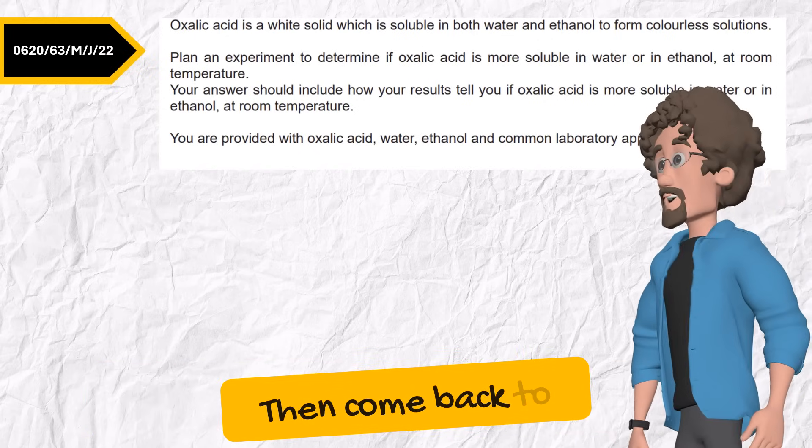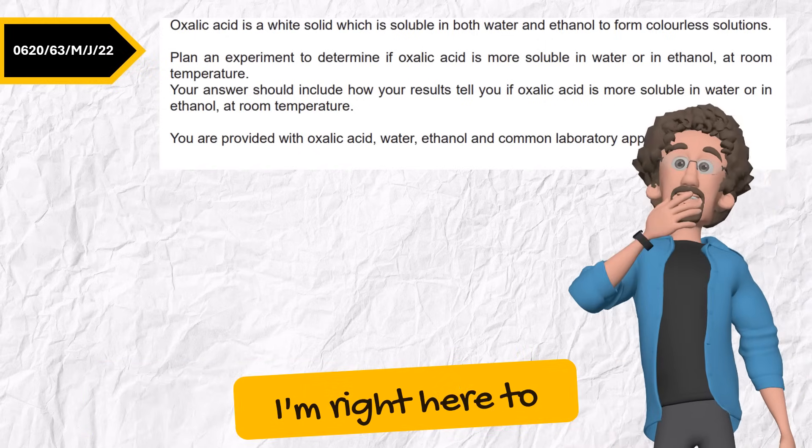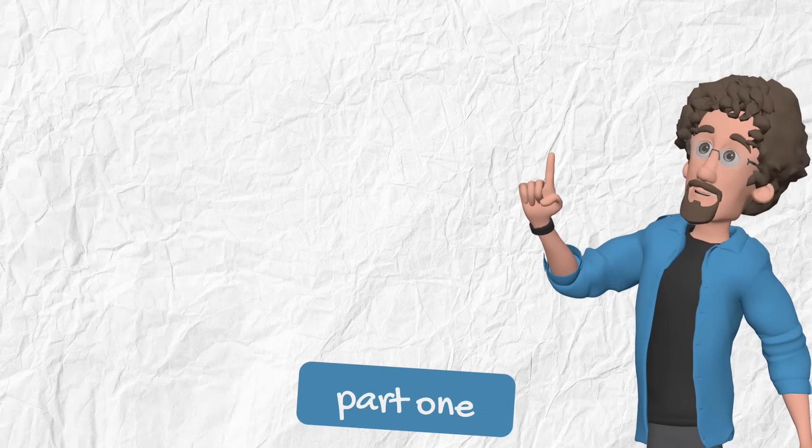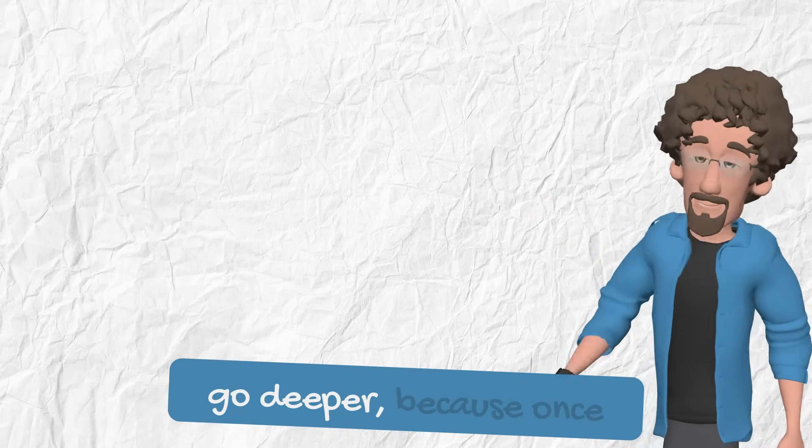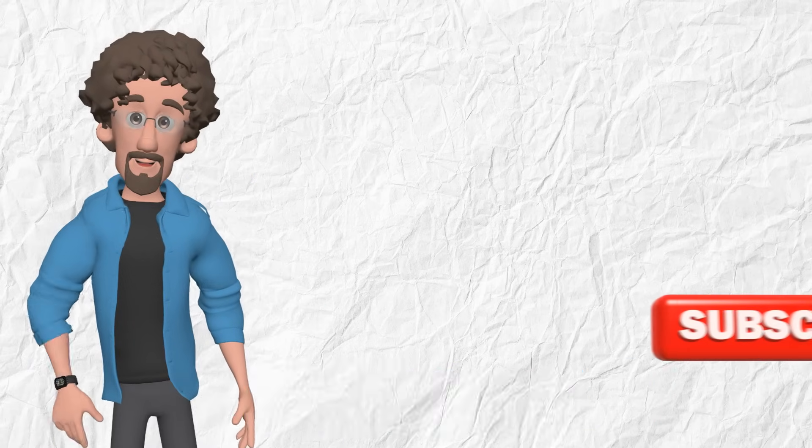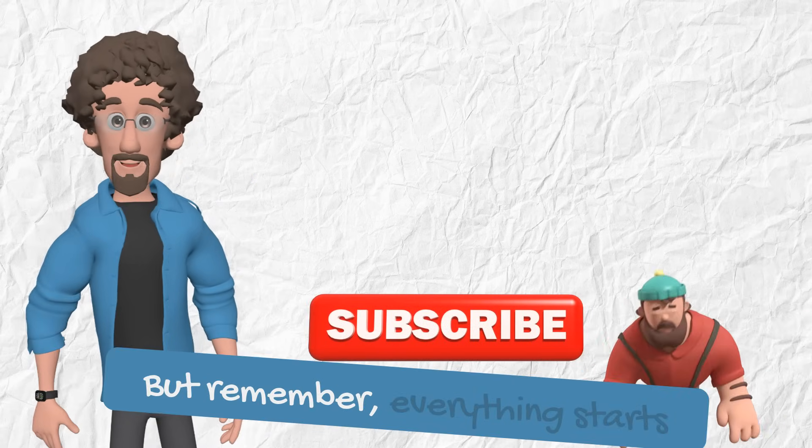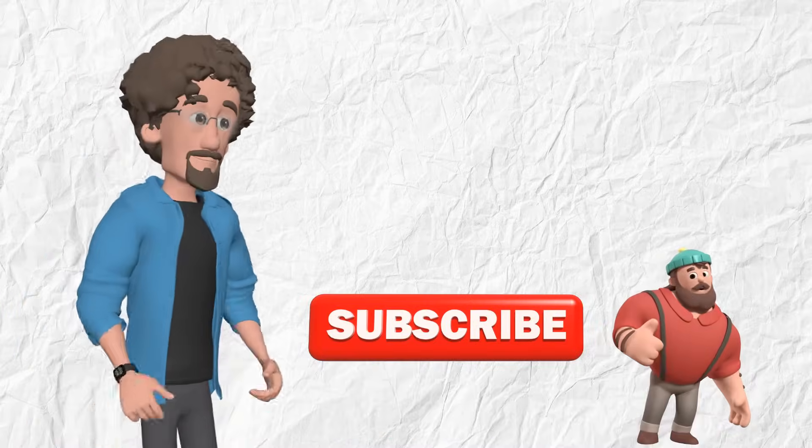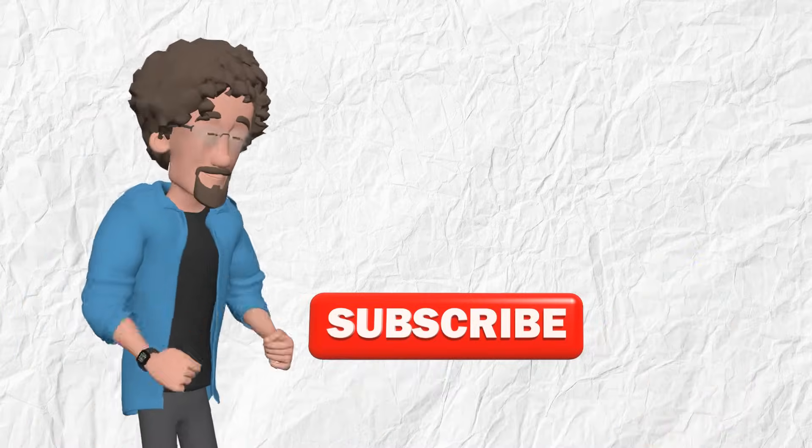Now I want you to go through past paper experiments and categorize each one. Then come back to me with any question. I'm right here to help. Now this was just part one. In part two, we go deeper. Because once you know which category you're in, you will be able to plan any experiment inside that category. But remember, everything starts here. Think smart, score full. See you soon.